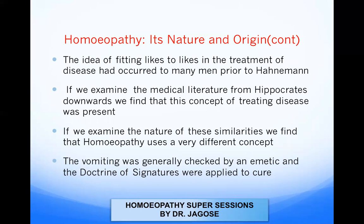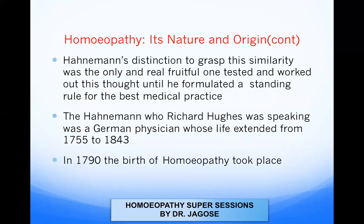Initially, many systems existed in which they used to treat diseases. For example, vomiting was checked by an emetic where they used large physiological doses of medicine, and in homeopathy the doctrine of signatures was also applied. Hahnemann's distinction was to grasp that this similarity was the only real and fruitful one — he tested and worked out this thought until he formulated a standing rule for the best medical practice. Amongst all other practices, homeopathy had its own distinction because it was tested and formulated to be the best medical practice. The Hahnemann that Richard Hughes was speaking of was a German physician whose life extended from 1755 to 1843, and in 1790 the birth of homeopathy took place.